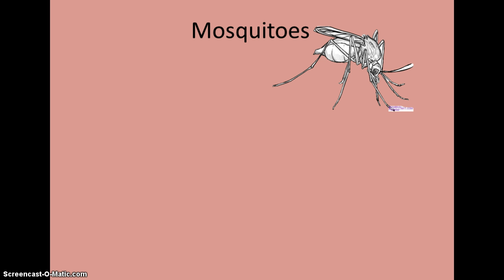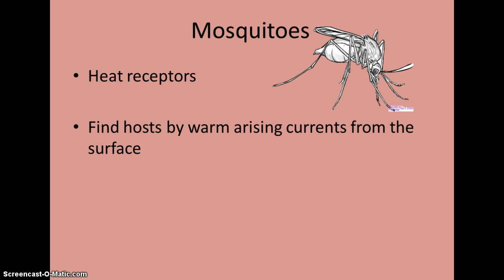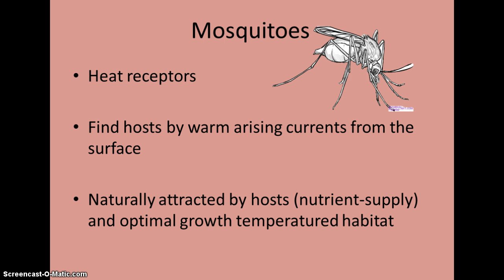Mosquitoes are a species exhibiting positive thermotaxis. They use heat receptors, which are stimulated by warmer rising air currents, and this helps them find hosts. In evolution, thermotaxis plays an important role for mosquitoes, because they are naturally attracted by hosts, which secures them a nutrient supply, and by habitats with an optimal growth temperature.